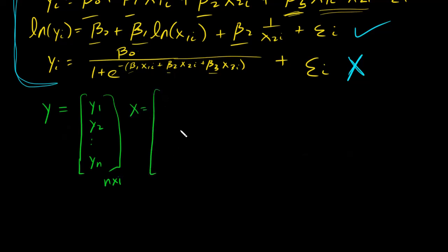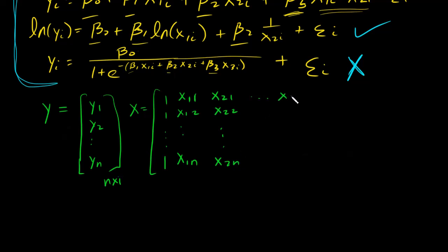Next I have the design matrix. The design matrix has a column of ones for the intercept, then all observations of my first predictor variable x1_1 through x1_n, then my second predictor variable x2_1 through x2_n, all the way through to my kth predictor variable x_k1 through x_kn. The dimensions of this matrix are n by p, where p equals k plus 1 columns — one for each predictor plus the intercept column.